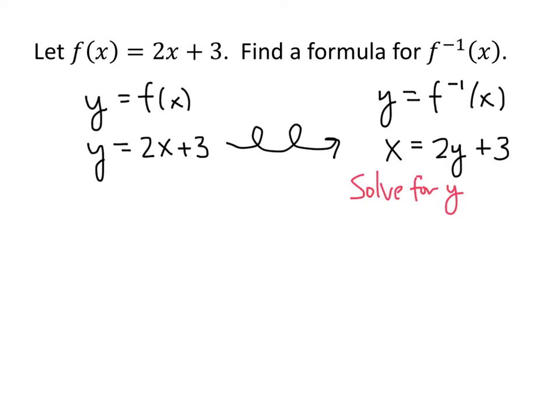Let's subtract 3 from both sides. And then we'll divide both sides by 2. And we get y equals x minus 3 divided by 2. And that's our formula for our inverse function.